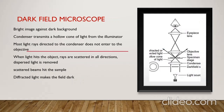In dark field microscope, the field is dark and the image appears bright. Before the condenser there is a dark field stop. The condenser transmits a hollow cone of light into the specimen. From the specimen, the light is scattered in all directions — some of the light enters into the objective lens while most of the light rays are removed. From the objective, it enters into the eyepiece and we can see the image through the eyepiece.